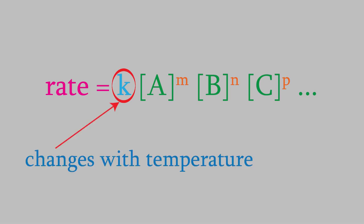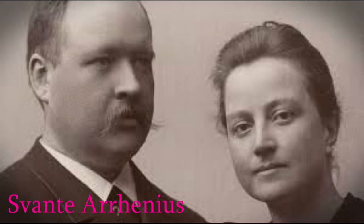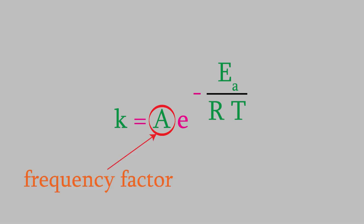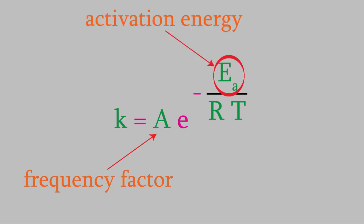The person who first figured this out was the Swedish chemist Svante Arrhenius, who developed this equation. Here, k is the rate constant, and on the right side is A, which is called the frequency factor. I'll talk more about that in a moment. Then there's e raised to the power negative EA over R times T. The e here is the same e that we saw when we talked about logarithms in video number 11. EA is the activation energy, R is the gas law constant, and T is the temperature.